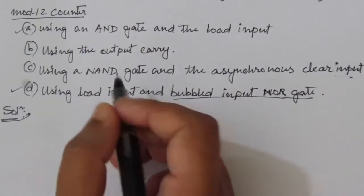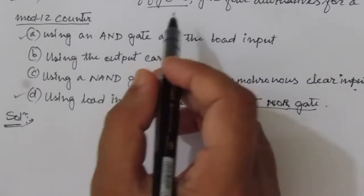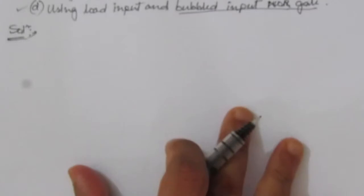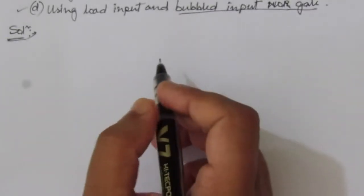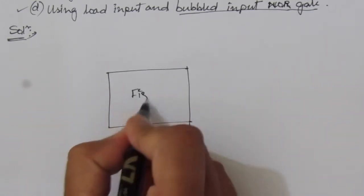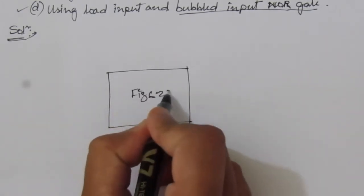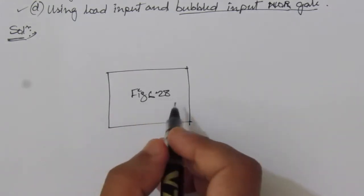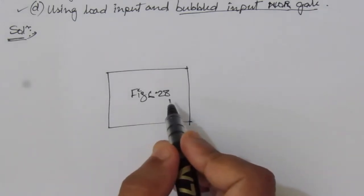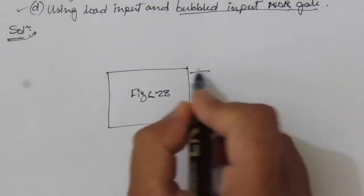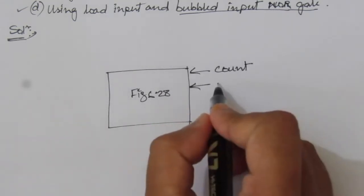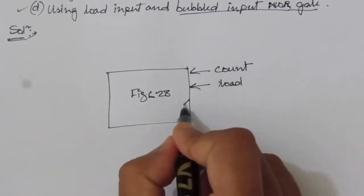Now let us proceed to the solution. In the first part of the problem, we have to use the block diagram of figure 6.28 and use the AND gate and load input. Let me draw the block diagram first. So suppose this is figure 6.28 — in the 5th edition book this will be 6.14. Inside this block we have the circuit of figure 6.28, that is a 4-bit counter. Here we will have one count input, one load input, and a clock input.